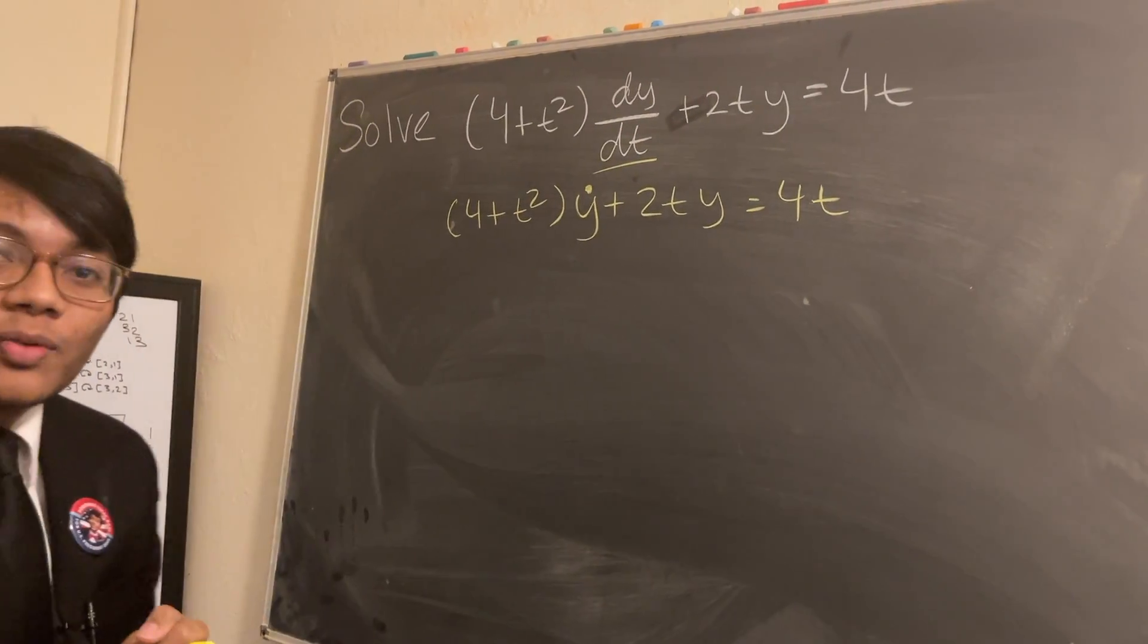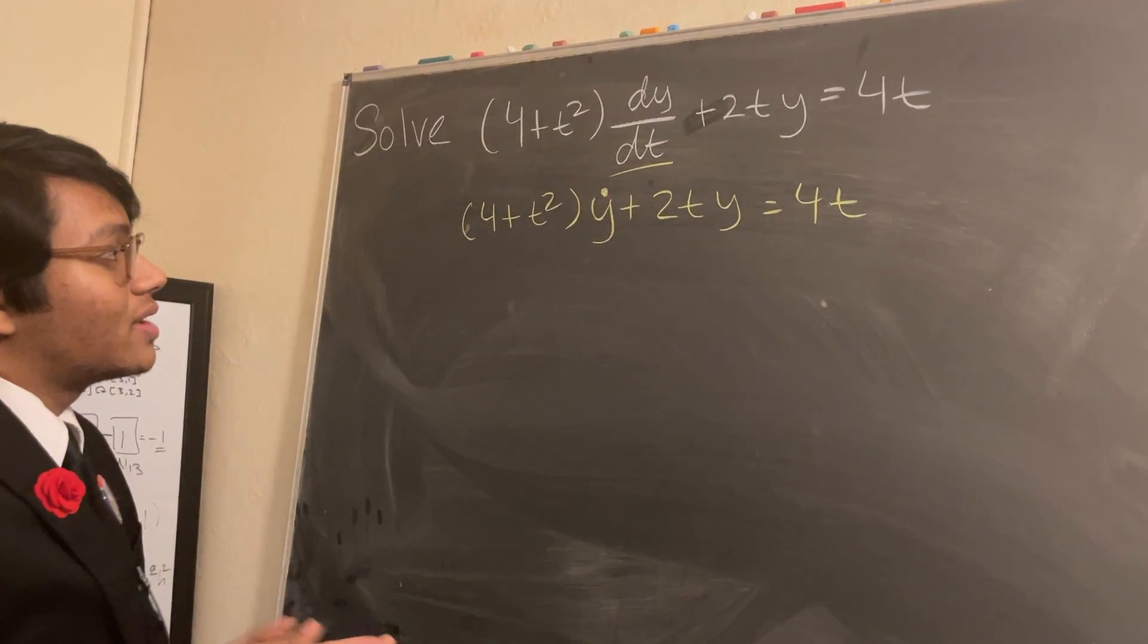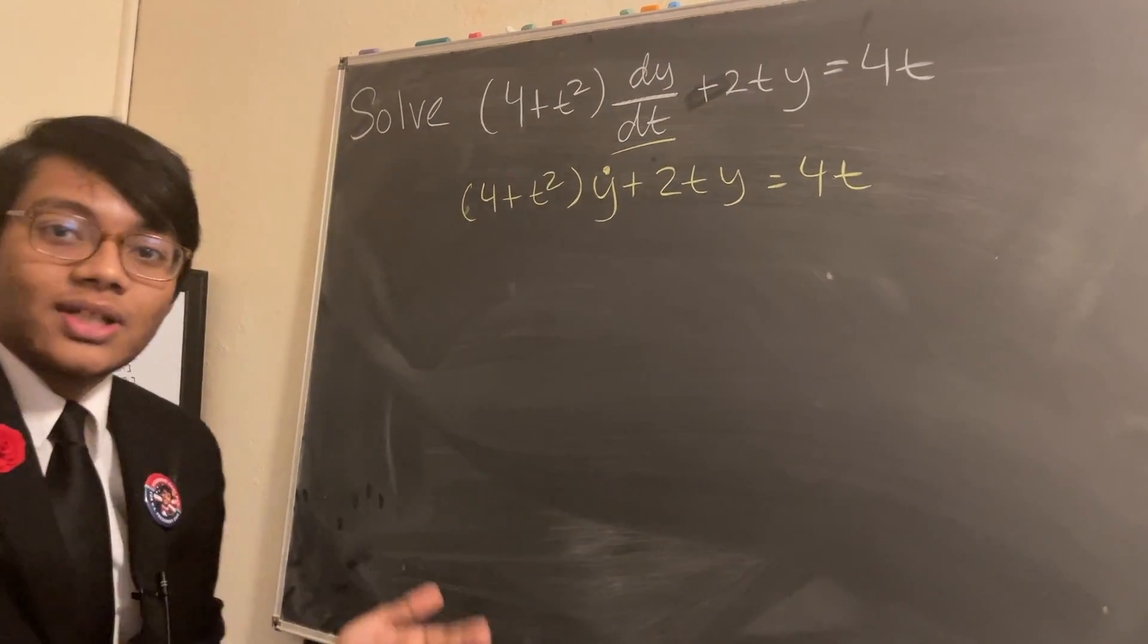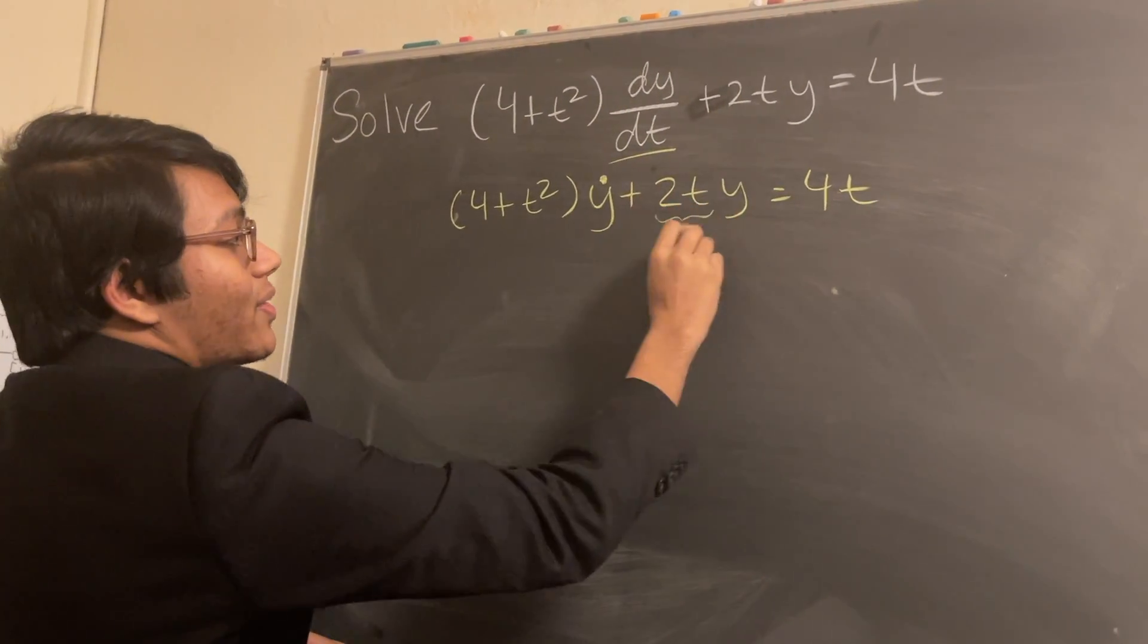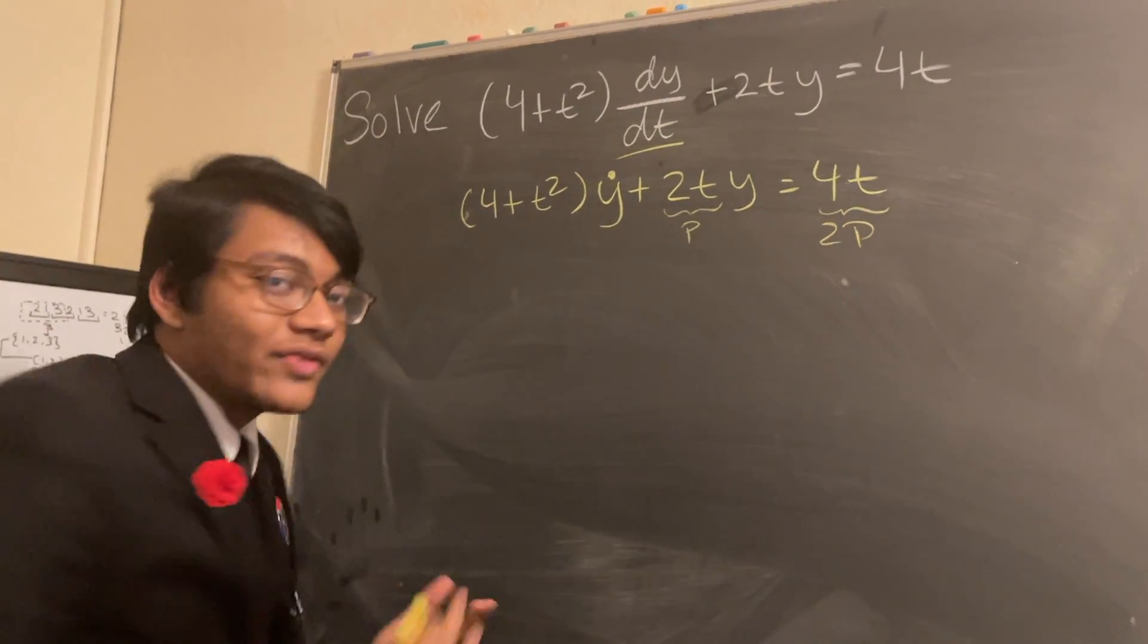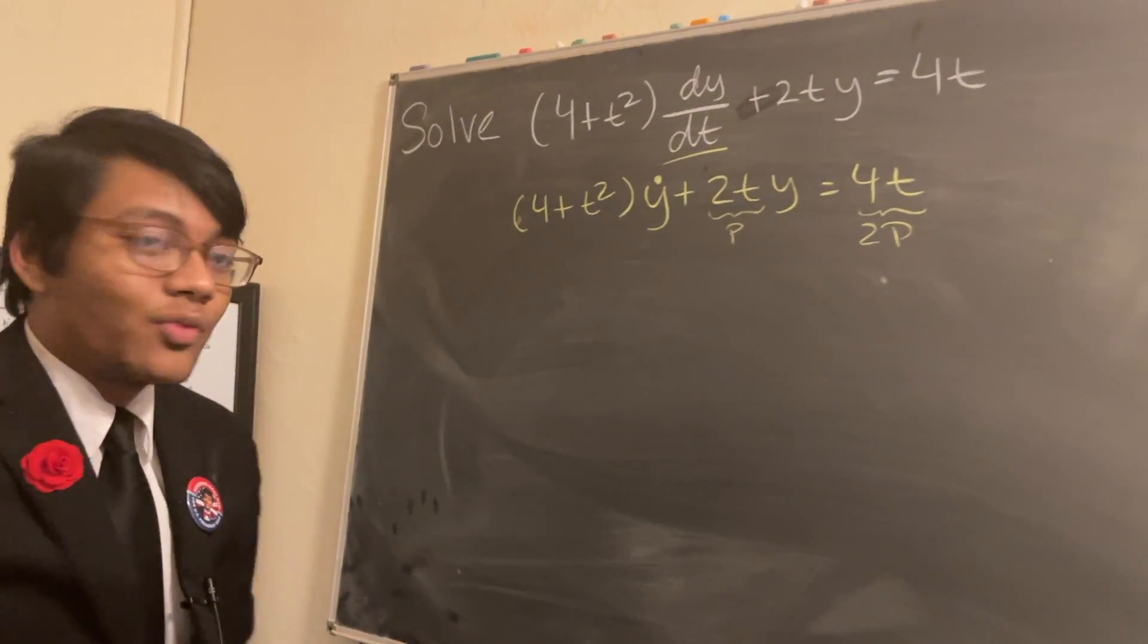Now if you look at this for a moment, you might try to factor, you might try to do some substitution by replacing 2t with p and 4t with 2p. None of those, neither of those two methods are going to work out.